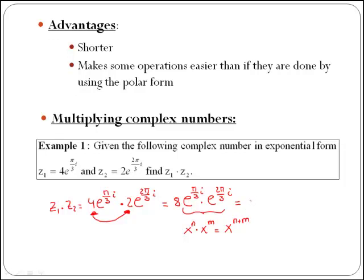Therefore, in our case, we will have 8e to the power of πi/3 plus 2πi/3, which is simply 3πi/3, which is the same as π as the threes will cancel. So we have πi.